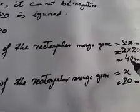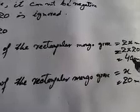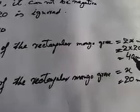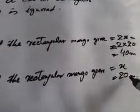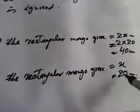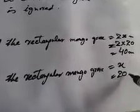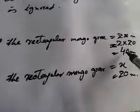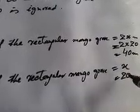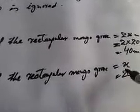To hum ne dekha ke hum aisa ek mango groove bana sakte hain jo rectangular ho aur jis ka length 40 meters hoga aur breadth 20 meters hoga. Hum dekhte hain ke length breadth ke double hai, breadth 20 hai length is ka double hai that is 40 meters aur area kitna hai 20 multiply 40 that is 800 meters.